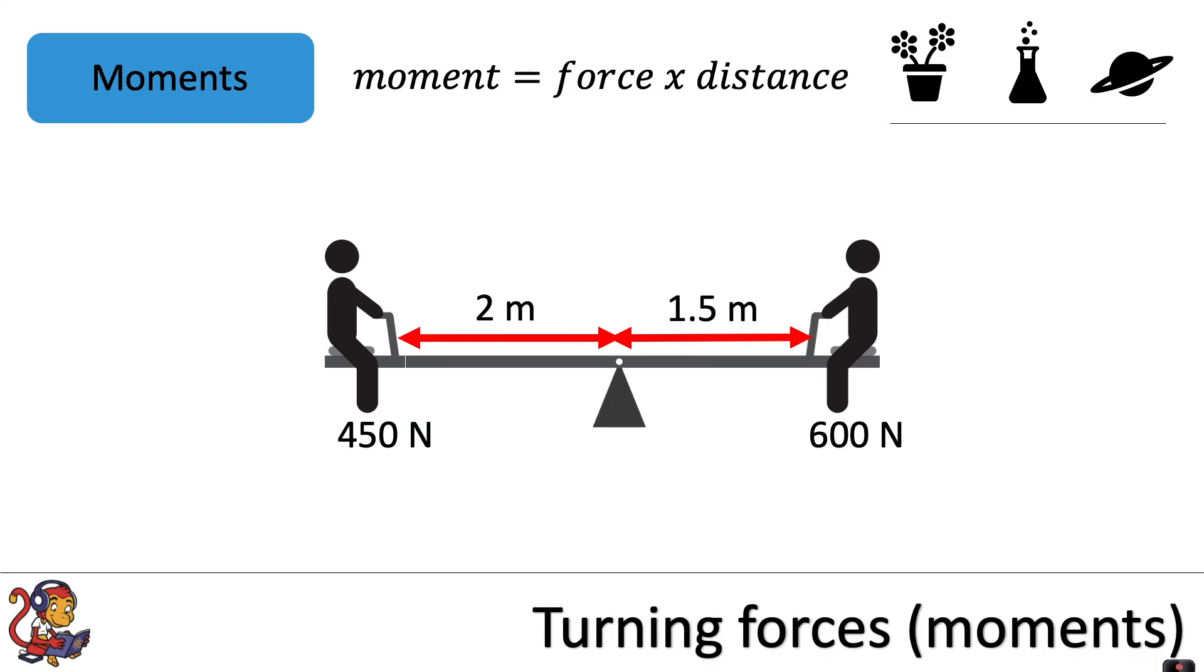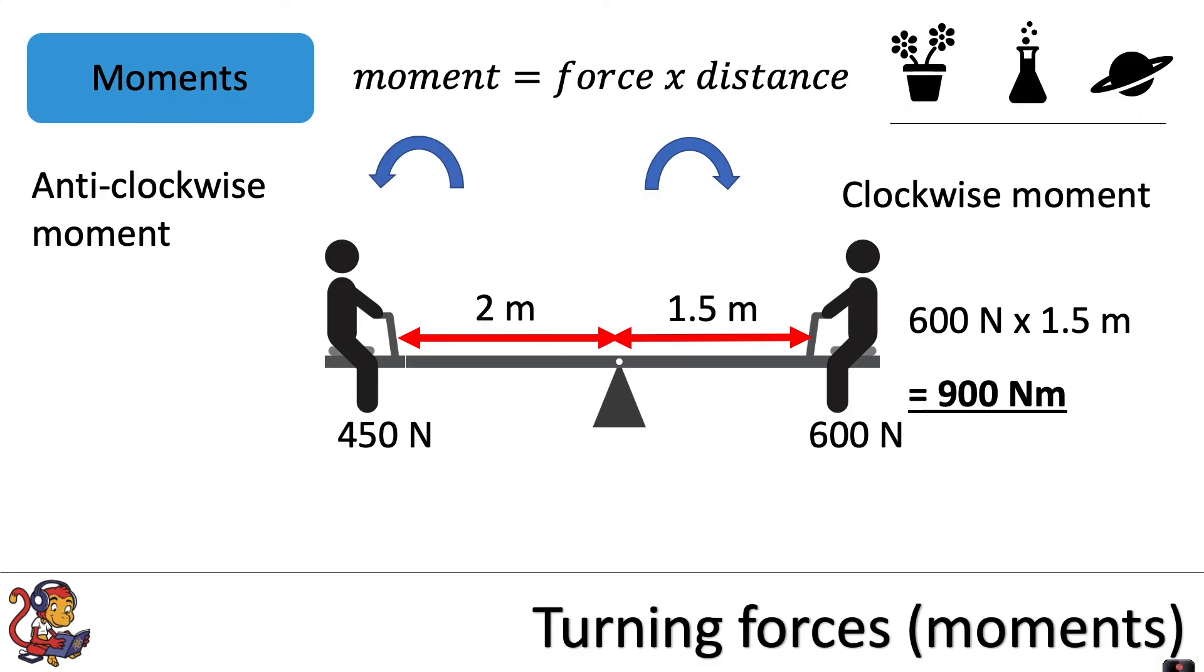Pause the video and have a go at this next example. The clockwise moment would be force times distance, which is 900 newton metres. The anti-clockwise moment would also be 900 newton metres.